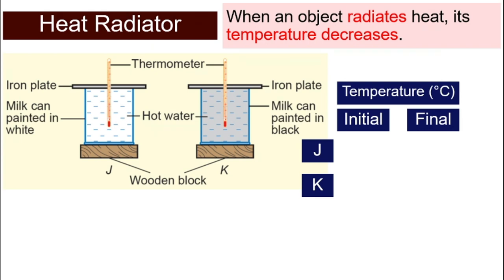We'll fill them up with hot water and we will take their initial temperature for both J and K. So initially, both of them have the hot water in them that is 90 degrees Celsius. Then we will wait for 10 minutes and then we will record their final temperature.